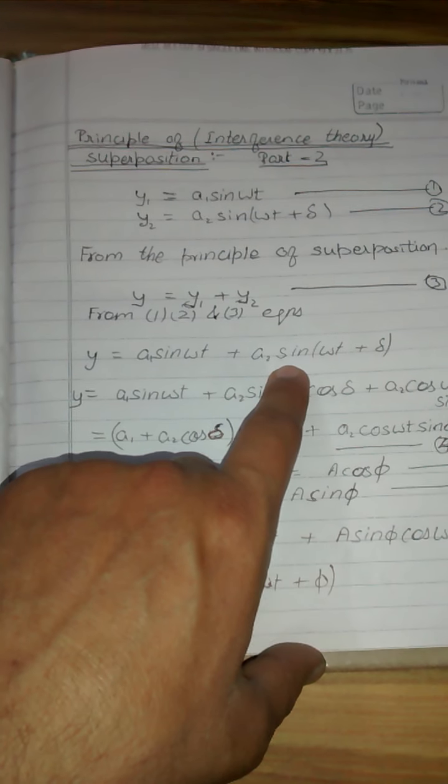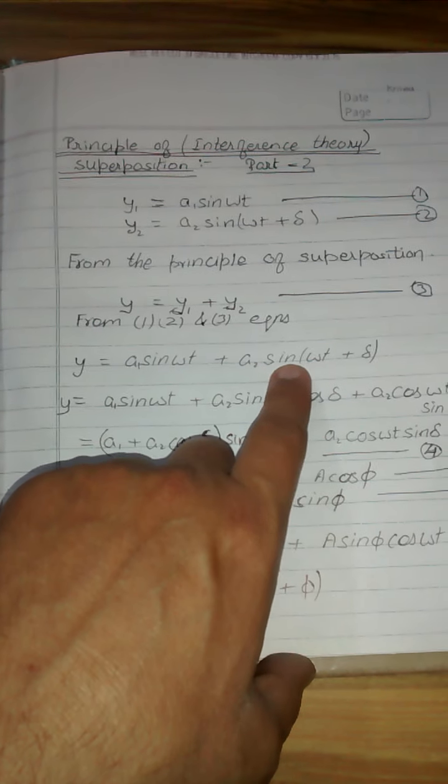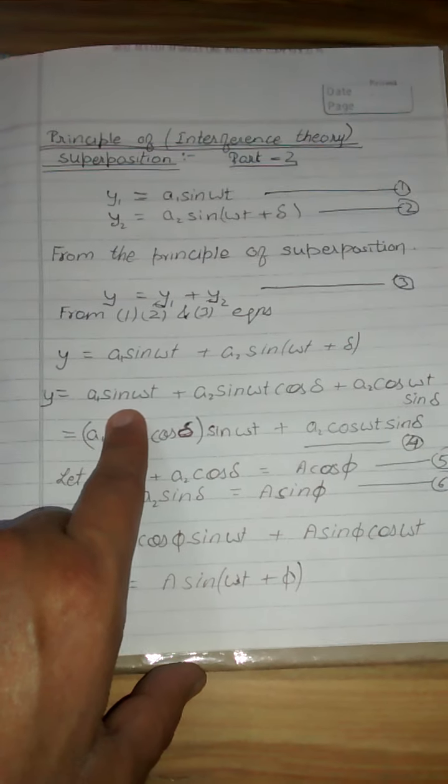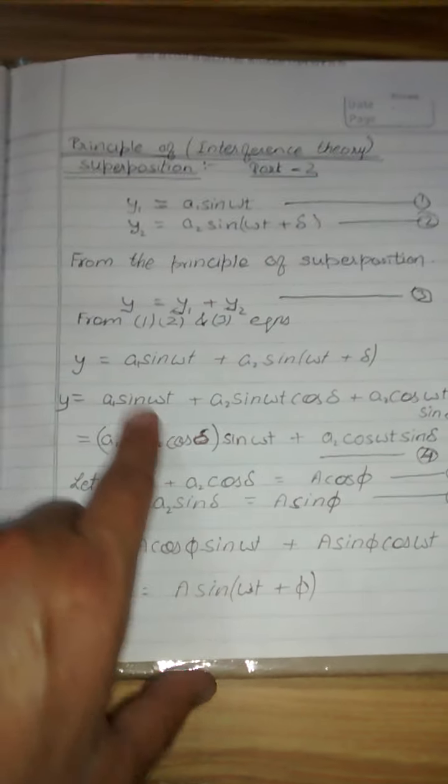We use the sine A plus B formula: sine A plus B is sine A cos B plus cos A sine B. So we take sine omega t as common.